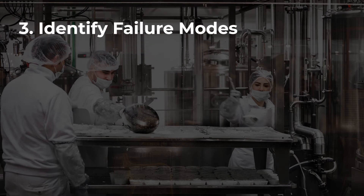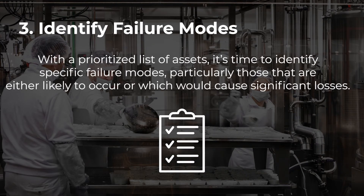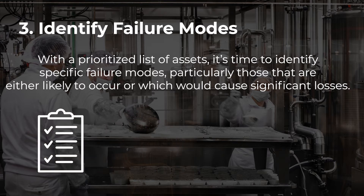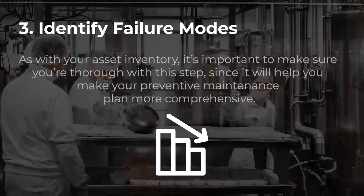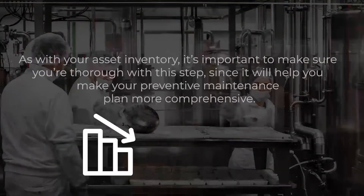Identify failure modes. With a prioritized list of assets, it is time to identify specific failure modes, particularly those that are either likely to occur or which would cause significant losses. As with your asset inventory, it is important to make sure you are thorough with this step, since it will help you make your preventive maintenance plan more comprehensive.